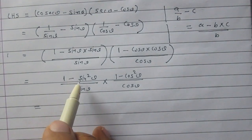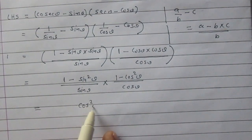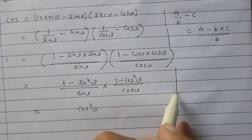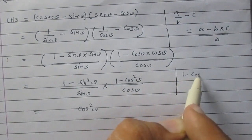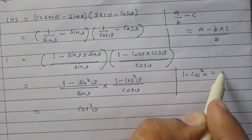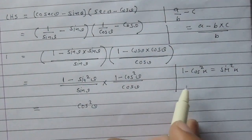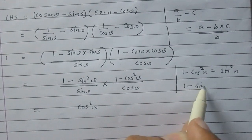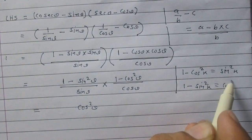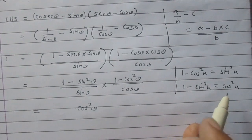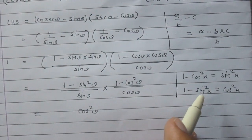We can write 1 minus sin²θ as cos²θ, according to the trigonometric identities: 1 minus cos²x equals sin²x, or 1 minus sin²x equals cos²x. So according to these two identities, 1 minus sin²θ becomes cos²θ, and 1 minus cos²θ becomes sin²θ.